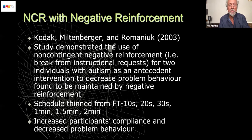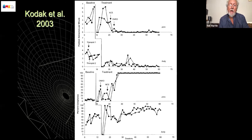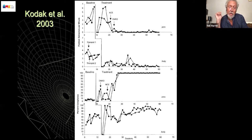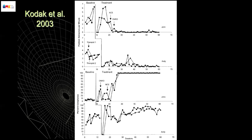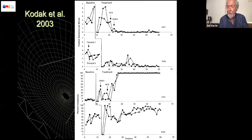Here's the data from that paper. The top two panels show problem behaviours reducing, and they actually compared non-contingent escape with the differential negative reinforcement of other behaviour. In the bottom panel, you see increases in compliance after the introduction of non-contingent escape. Again, pretty powerful data sets for a fairly easy intervention.